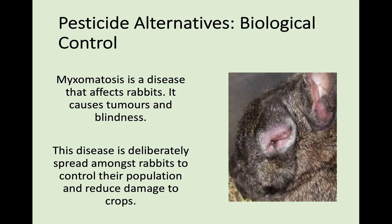Another example of biological control is using disease. Myxomatosis is a disease that affects rabbits and has been spread to decrease rabbit numbers, because rabbits can cause a lot of damage to crops. Instead of manually finding and trapping them, you can spread myxomatosis through a rabbit population to greatly decrease their numbers and increase crop yield. It's controversial, but it's another natural alternative to pesticides.